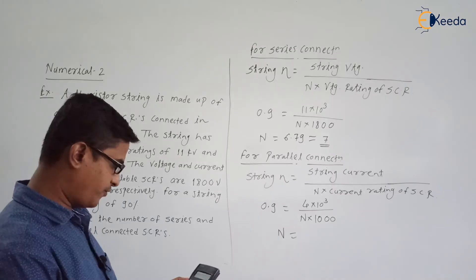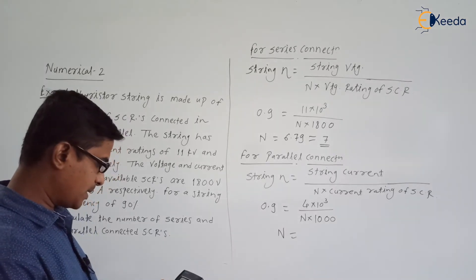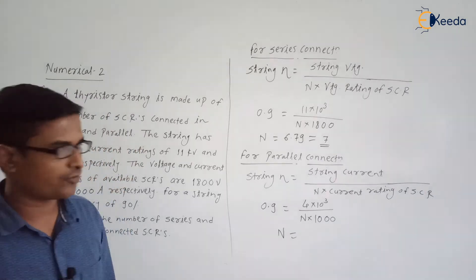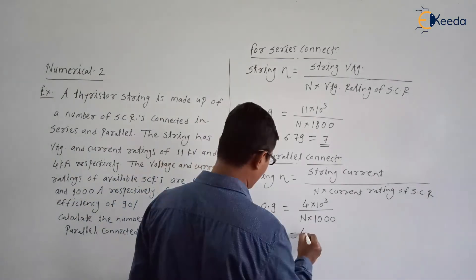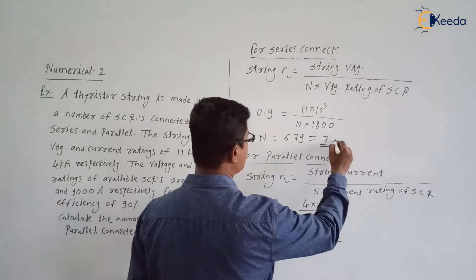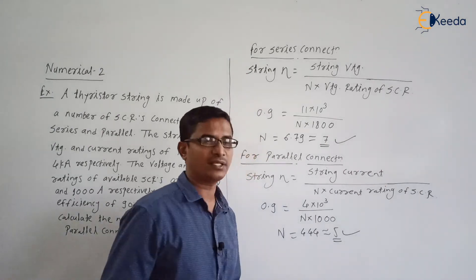We can find the number of SCRs required to be connected in parallel. It is 4000 divided by 1000 divided by 0.9. So it is 4.44 means roughly 5. So we need to connect 5 SCRs in parallel and 7 SCRs in series. Are you getting the point?